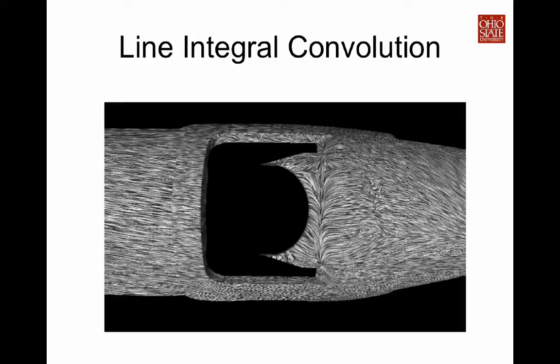This image shows an example of the output produced by the line integral convolution algorithm. Different from the traditional flow line method, line integral convolution does not produce line primitives. Instead it produces a texture where pixels along the flow direction have coherent values that make it very easy to visualize the flow direction everywhere in the domain.